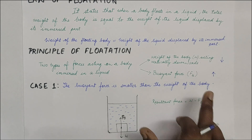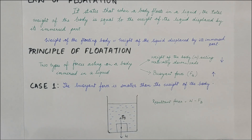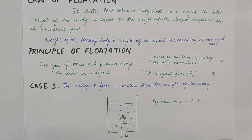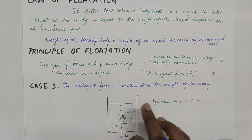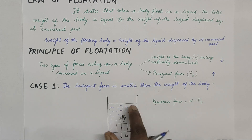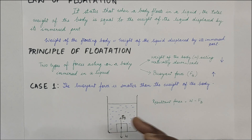Case 1: If the buoyant force (FB) is smaller than the weight of the body. As you can see in the diagram, the body has more weight so the buoyant force is not able to hold it up and it sinks. The resultant force is calculated by subtracting FB from the weight, and the body sinks. This happens when the density of the body is greater than the density of the liquid.